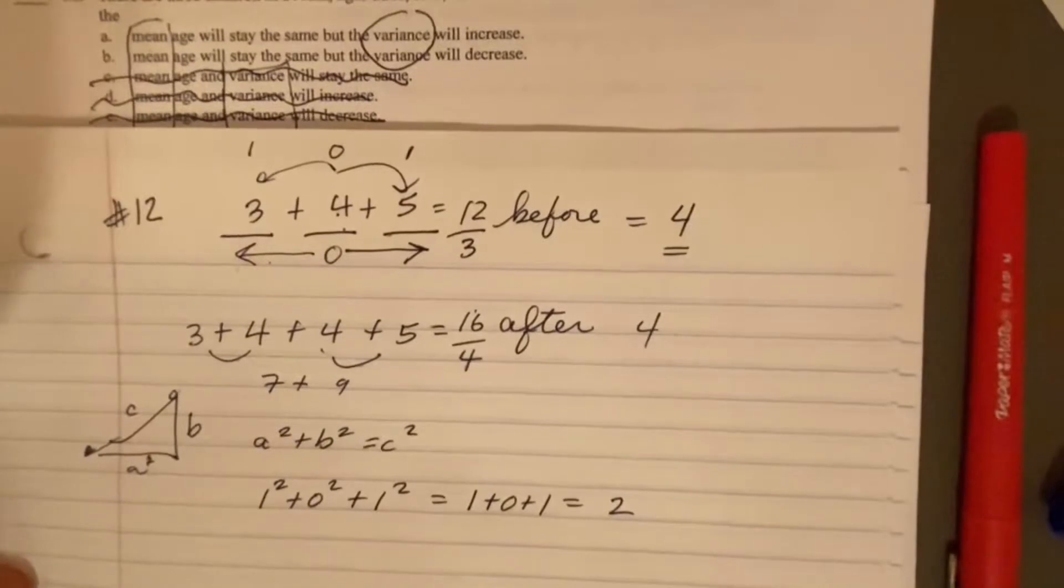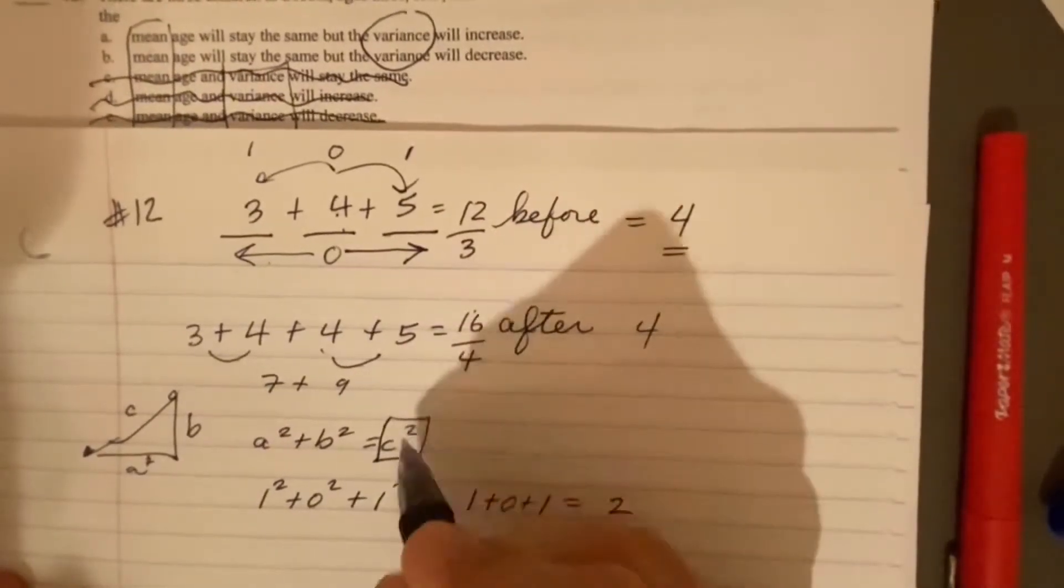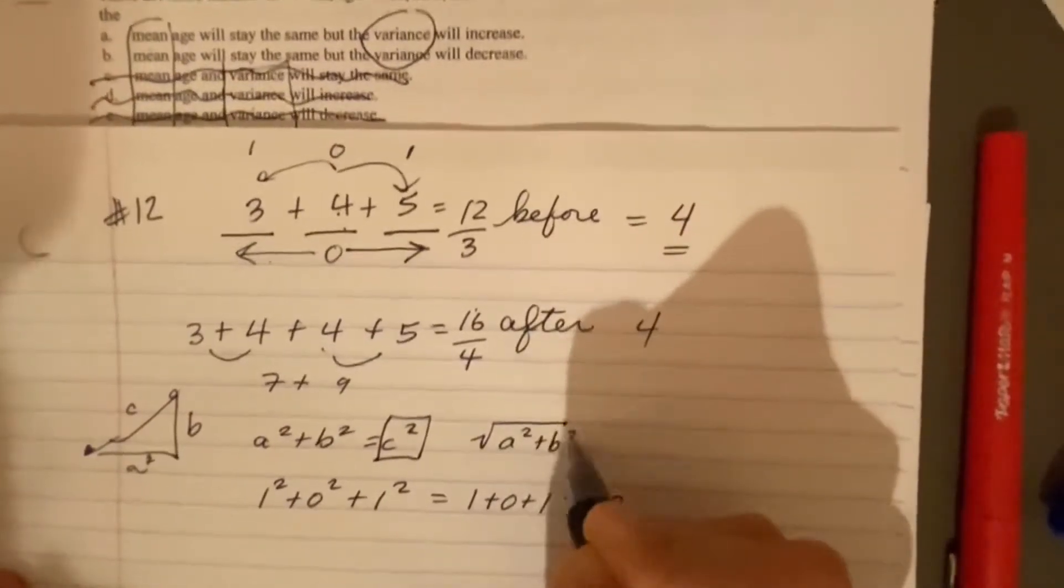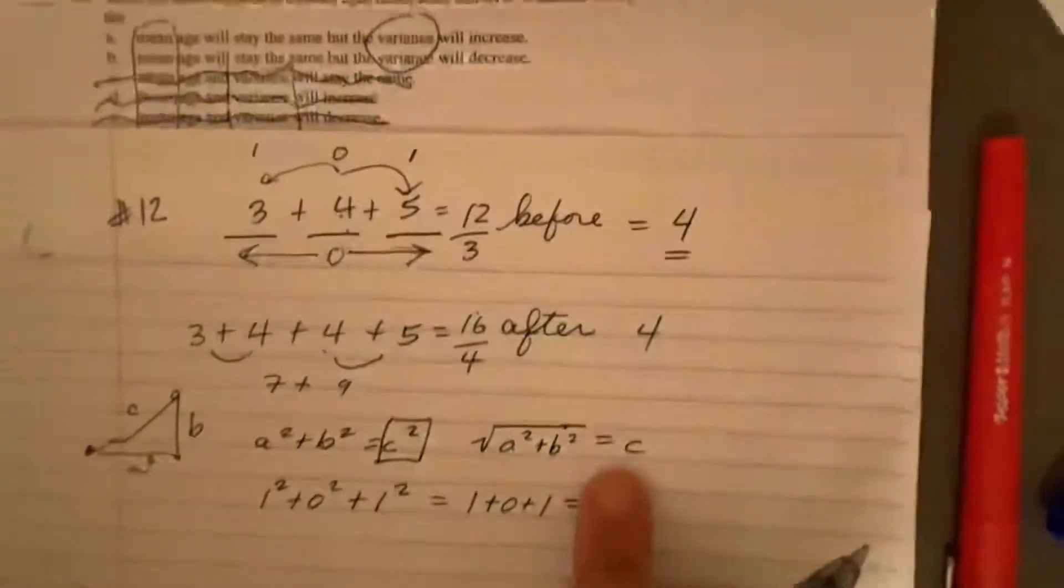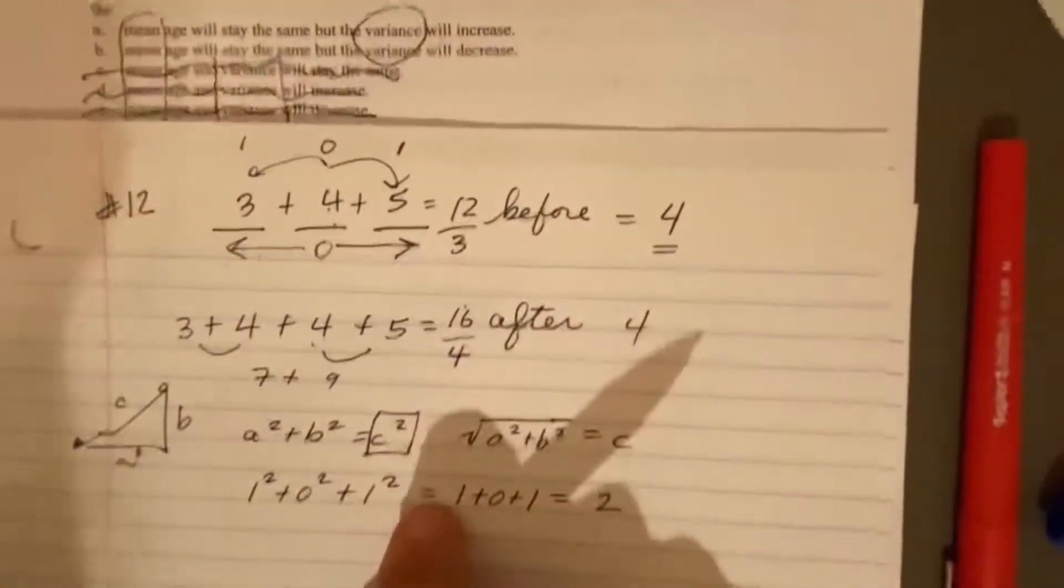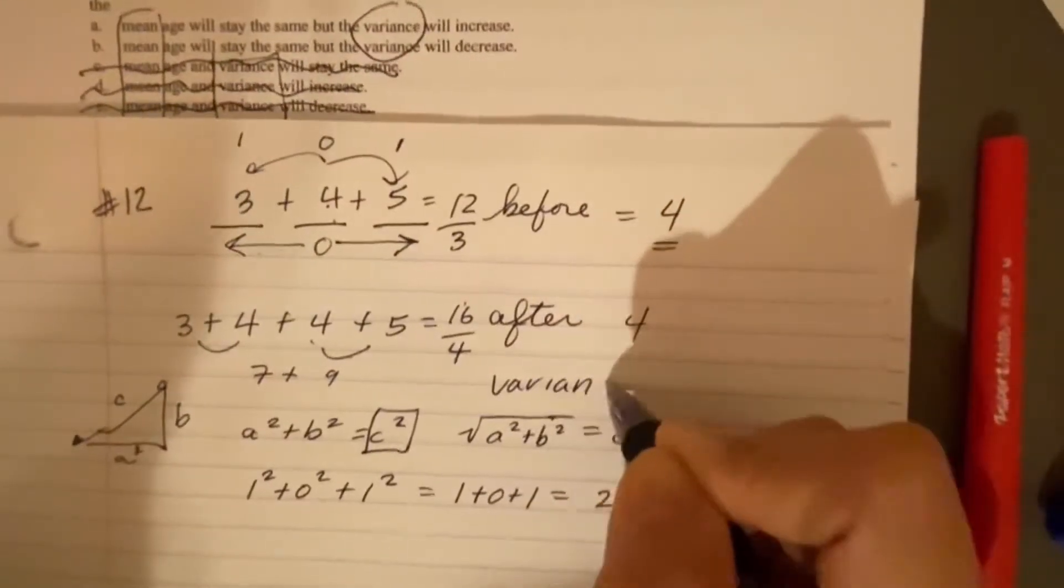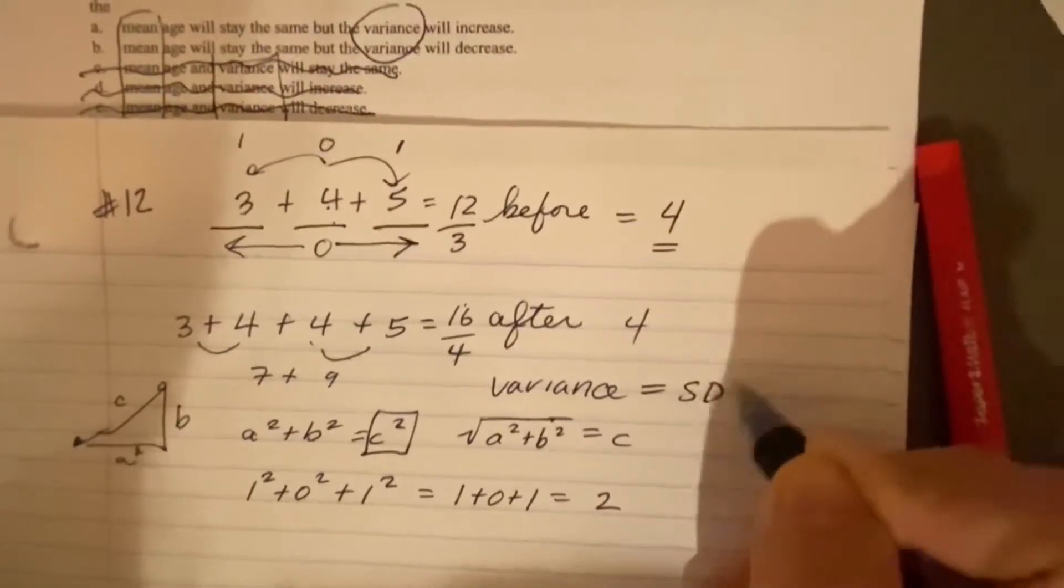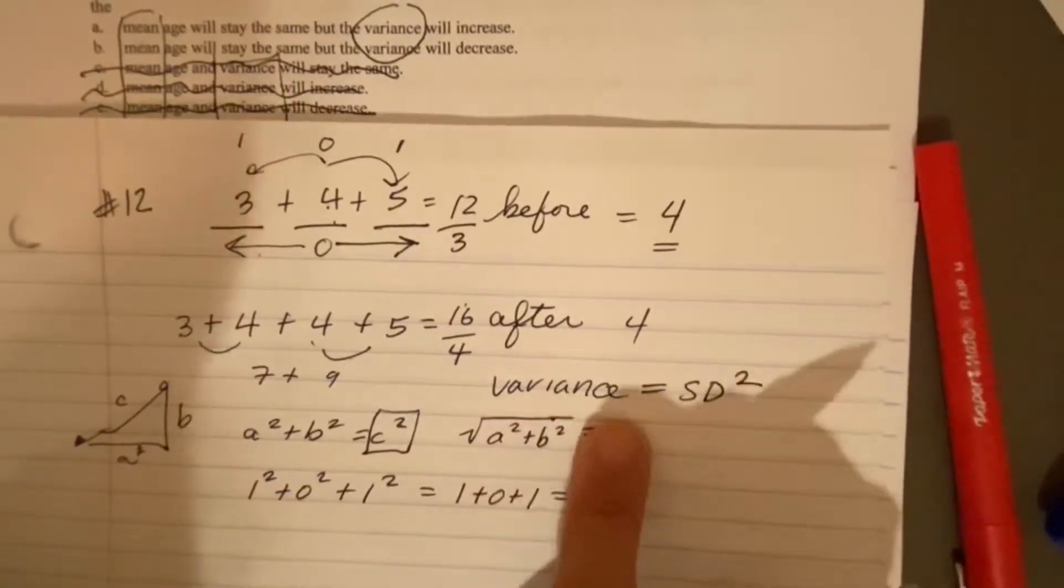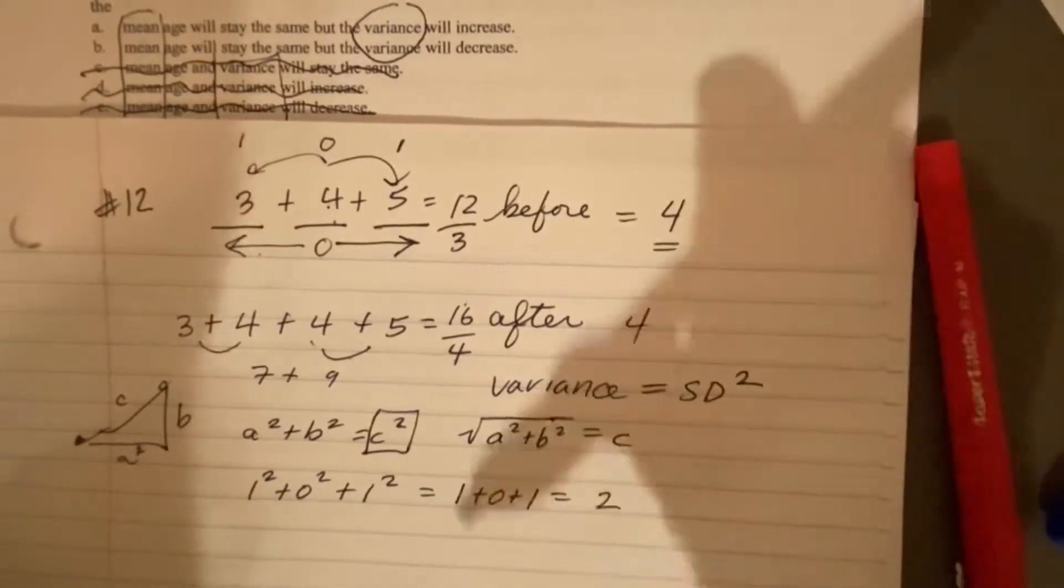And then typically for standard deviation, we would need to take the square root of that information to find the number. And that's the standard deviation. The average amount that any number is away from the mean. Well, variance means standard deviation squared. So it's kind of like, before I take the square root of it, this would be called the variance. And this is the standard deviation.